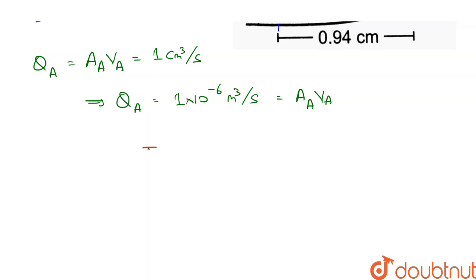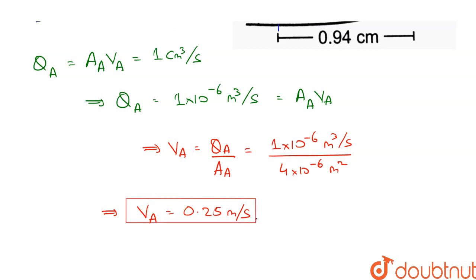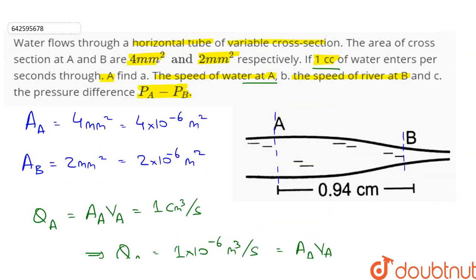So after rearranging we get VA is equal to QA upon AA. QA is equal to 1 into 10 to the power minus 6 meter cube per second divided by 4 into 10 to the power minus 6 meter square. Therefore, speed of flow at A is equal to 0.25 meter per second. This is the answer to the first part.